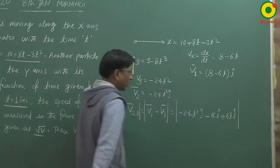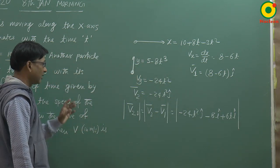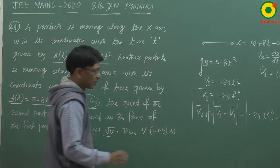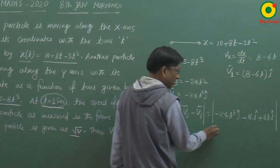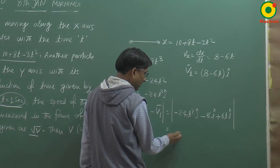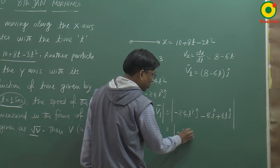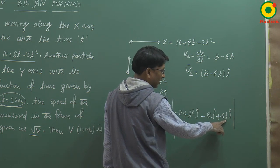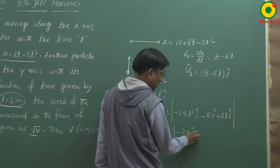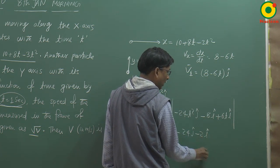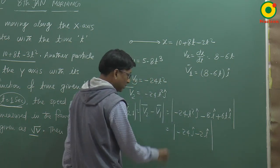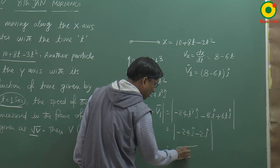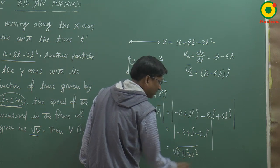इसका magnitude निकालना है। Relative speed पूछा गया है t = 1 second पर। तो t = 1 substitute करते हैं: y-component आएगा -24 ĵ। x-component में t = 1 रखने से -8 + 6 = -2, यानी -2 î। इसका magnitude निकालेंगे तो आएगा √(24² + 2²) = √(576 + 4)।